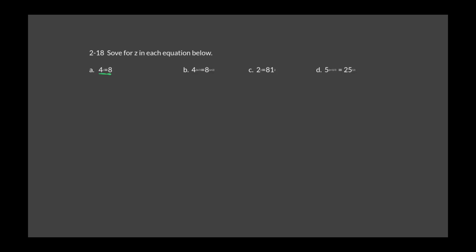Part A: the base for both sides would be 2. We write 4 as 2 squared to the Z, and 8 as 2 to the third. When raising a power to a power, we multiply: so this becomes 2 to the 2Z equals 2 to the third. With the same base, cancel the bases and solve: Z equals 3 over 2.